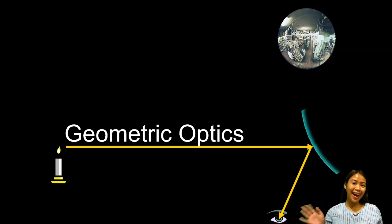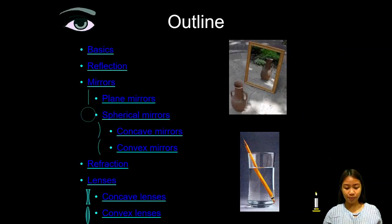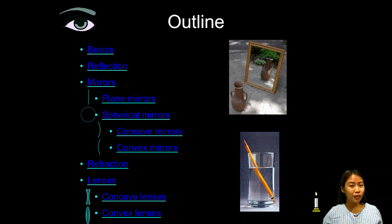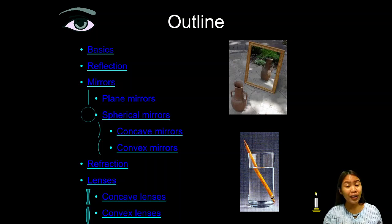Hello, this is Miss Car and welcome to Learning Physics. We're going to study geometric optics. In this lesson, we'll study the reflection of light in mirrors — specifically plane and spherical mirrors, including concave and convex mirrors. We'll also study the refraction of light in lenses, dealing with reflection and refraction of light in concave and convex lenses.